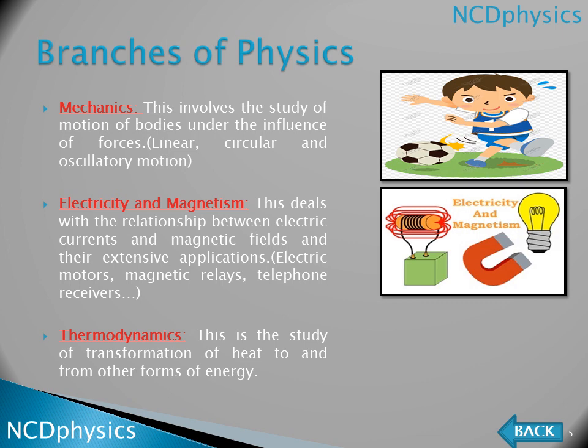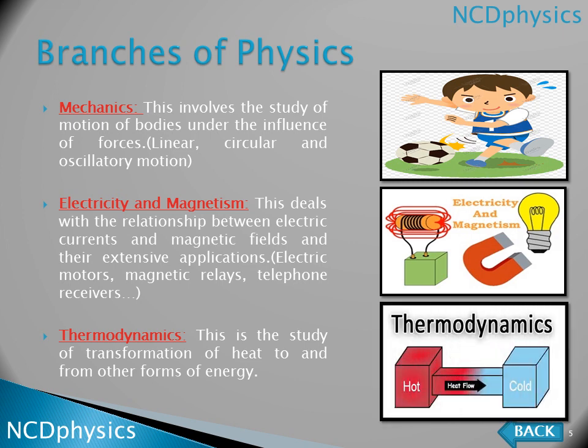The next branch is thermodynamics. This is the study of the transformation of heat and other forms of energy. We study how heat is transferred — if we have a hot object and a cold object, heat energy flows from the hot object to the cold one. For example, if you hold a cold object, after some time it becomes warm because heat is transferred from your hand to the object. We study how heat flows from the sun to the earth, and through liquids, gases, and solids.